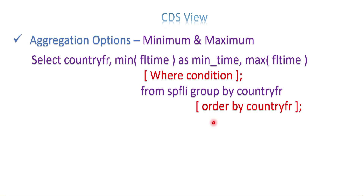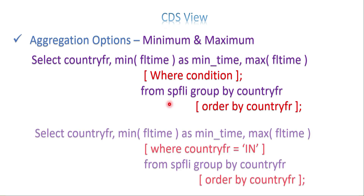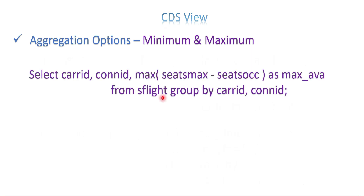For minimum and maximum, you can also add a WHERE condition and ORDER BY. Make sure the WHERE condition is added before the GROUP BY option, otherwise you will get a syntax error. You can also have both MIN and MAX in the same query - if you want the minimum of one field and the maximum of another, you can add both in the same query depending on your business need.